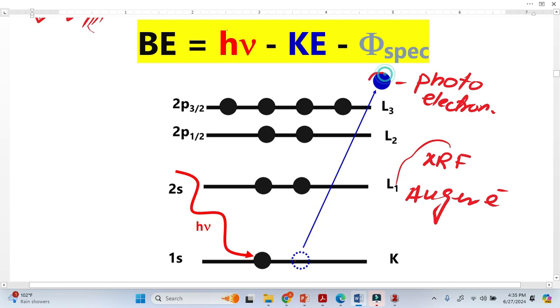So once we have this photoelectron, the XPS detector gives us the kinetic energy. We know hν is the photon energy and this is the spectrometer work function which has a constant value, so we can easily calculate the binding energy.